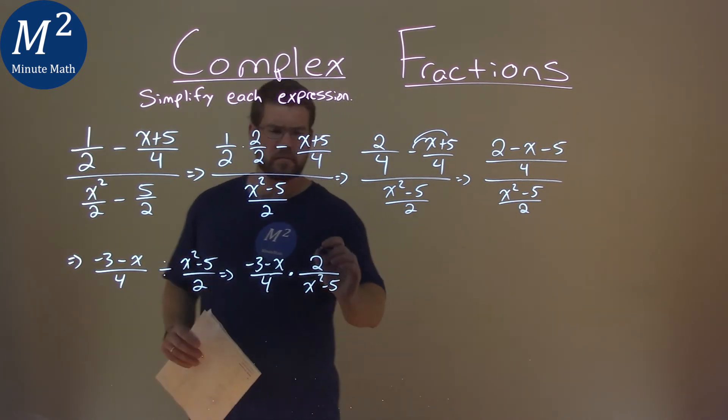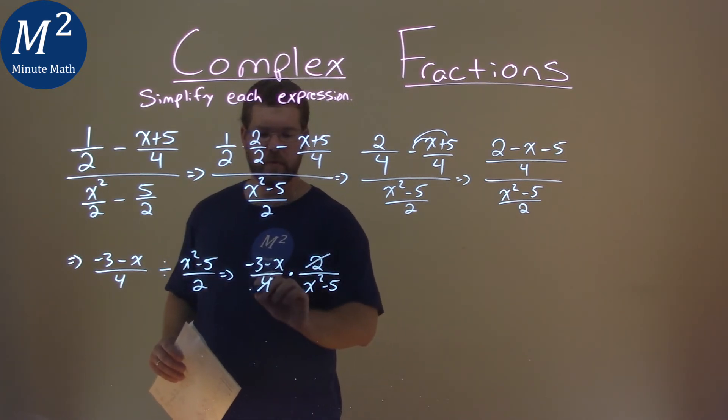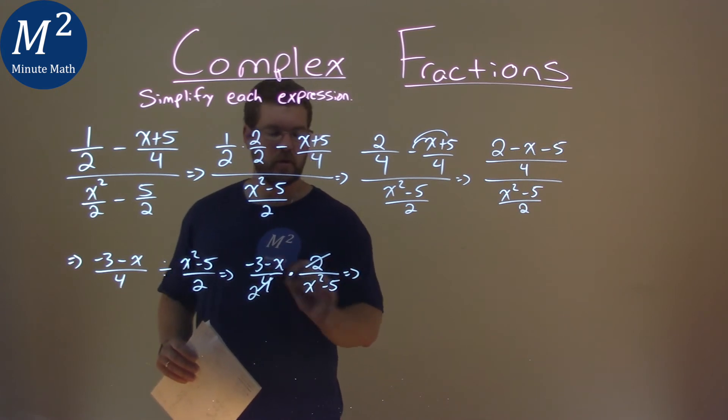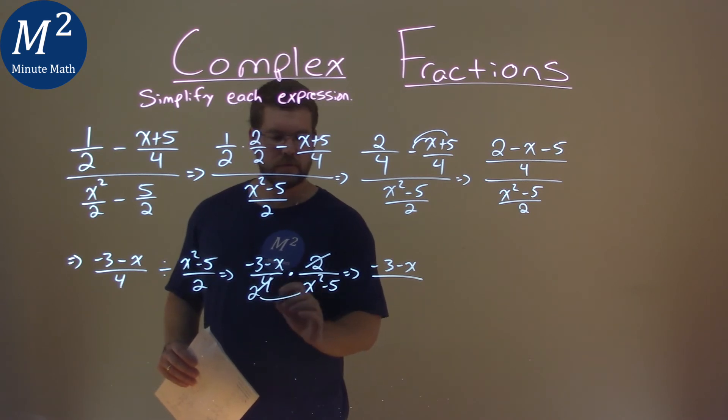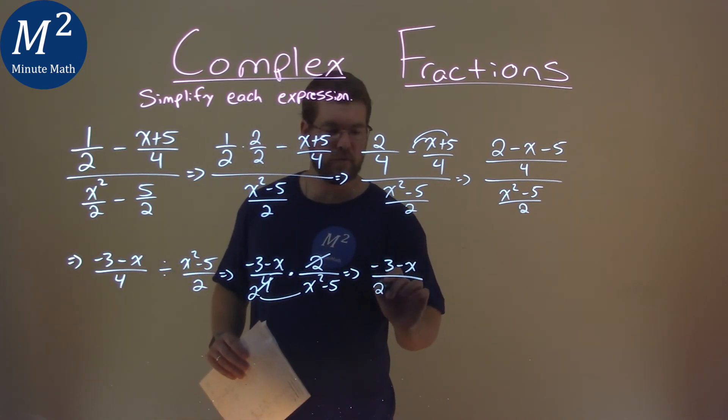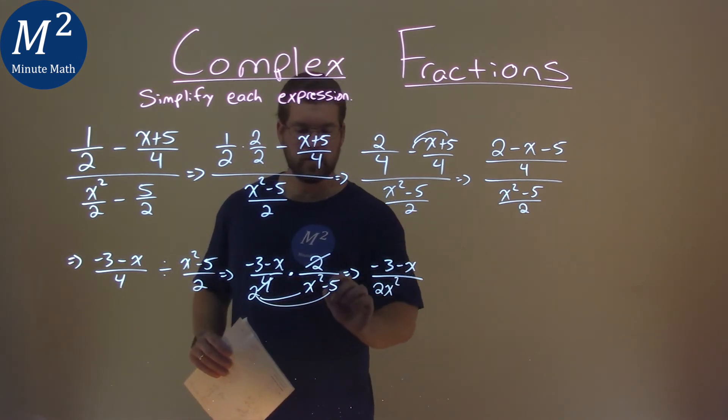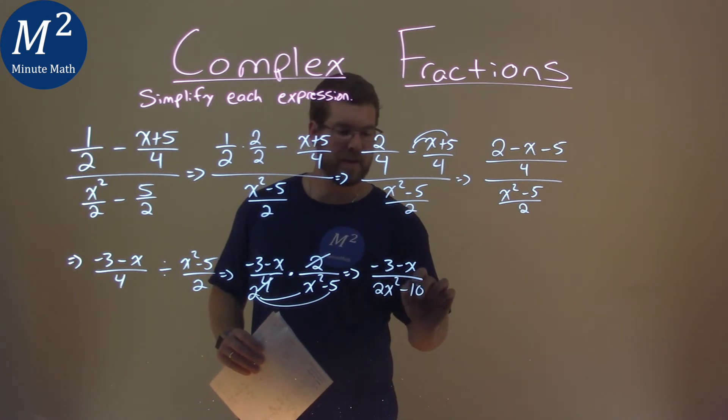Well, 2 and 4 cancel, so that becomes a 2 right here. So the numerator is just a negative 3 minus x. Denominator is 2 times x squared is 2x squared, and 2 times a minus 5 is a minus 10.